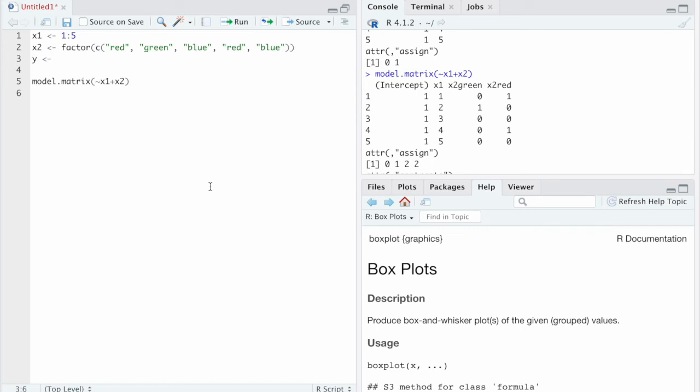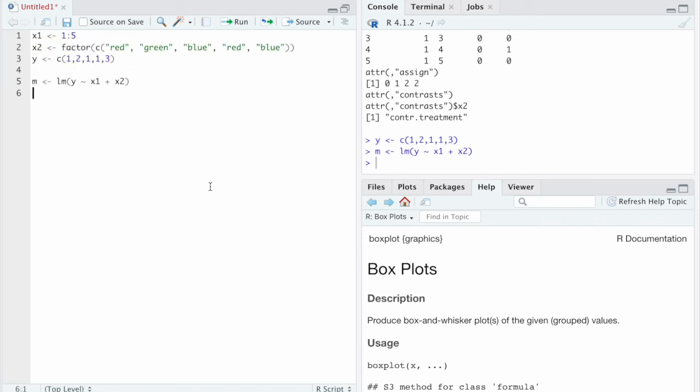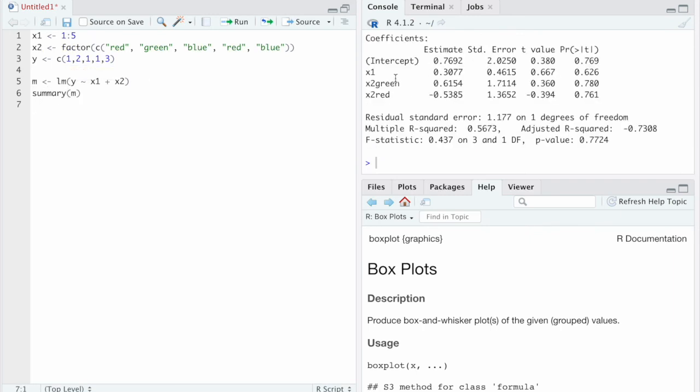And let's just add a y. Then we can do linear regression with this. Say it's 1, 2, 1, 1, 3. I just made something up. Then we can do lm y tilde x1 plus x2. Let's call that m. And then if I do summary m, it tells us a regression coefficient for the intercept, for x1, and then for green and red. And these are values we need to add to the intercept. So in this fitted model, if it's a green sample, then the intercept should be 0.7 plus this. And if it's a red sample, then the intercept should be 0.7 minus 0.5. And if it's a blue sample, that's the base level. So everything is relative to this. So for blue samples, the intercept will just be 0.7692. That's how that works.